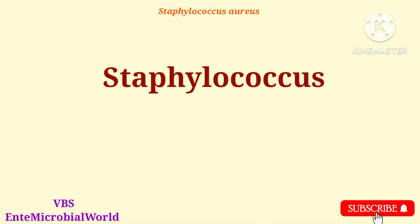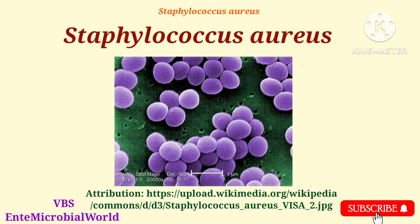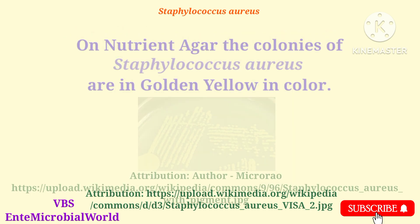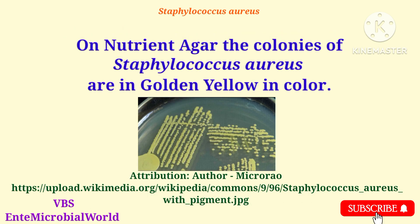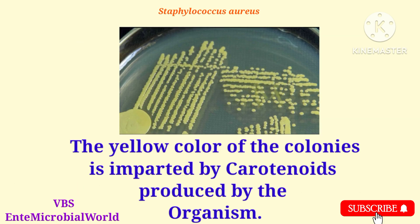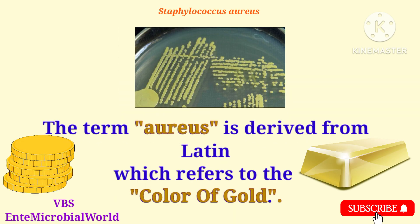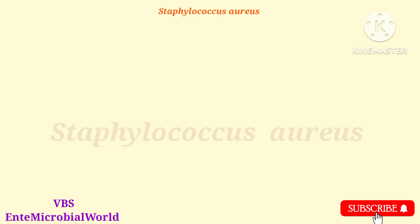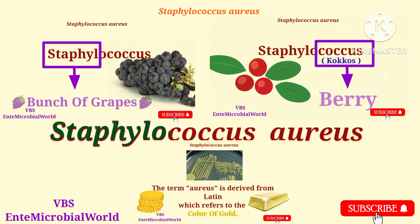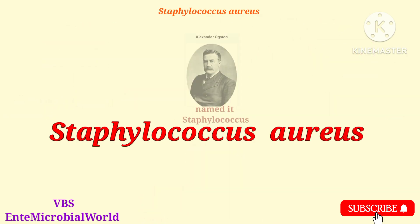The major pathogen of this genus is Staphylococcus aureus. On nutrient agar, the colonies of Staphylococcus aureus are golden yellow in color. The yellow color of the colonies is imparted by carotenoids produced by the organism. The term aureus is derived from Latin, which refers to the color of gold. Up to this, we learned the meaning of the name Staphylococcus aureus and who named it.